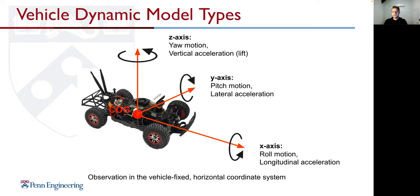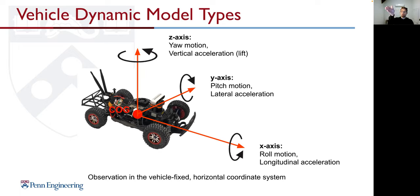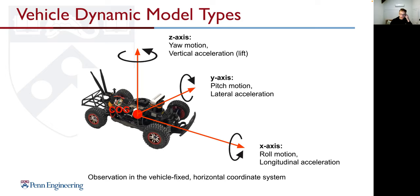When looking at the vehicle, we have the x-axis for longitudinal dynamics and rolling, the pitch axis for lateral acceleration and pitching, and the yaw motion for vertical acceleration and lift. These six degrees of freedom define our vehicle movements, always with respect to the center of gravity.